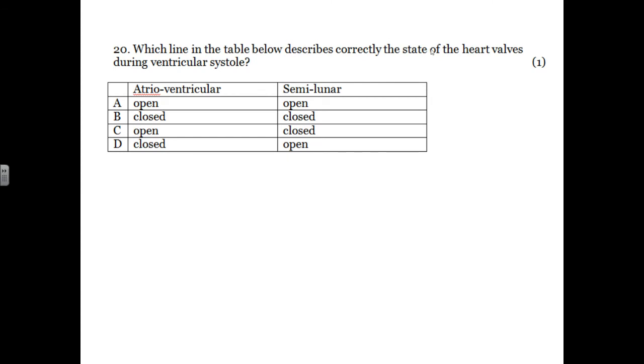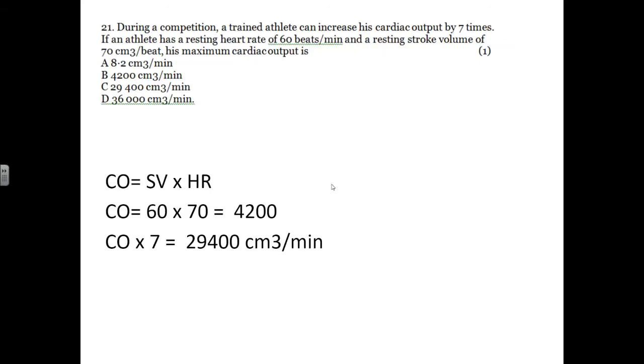Which of the following describes the state of the heart valves during ventricular systole. So ventricular systole, the pressure will go up from the ventricles and it will close the AV valves. It will open the semilunar valves. So we're looking for closed and open, which is D. Here's the answer.